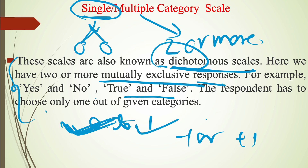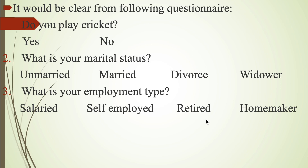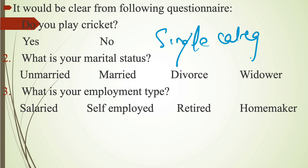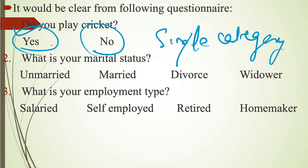In the case of multiple category scale, we can select responses which are more than two. Now, here are the examples of single category scale. The first example is: Do you play cricket? Options given are yes or no. The respondent has to choose only one option from yes or no. This is the example of a single category scale.